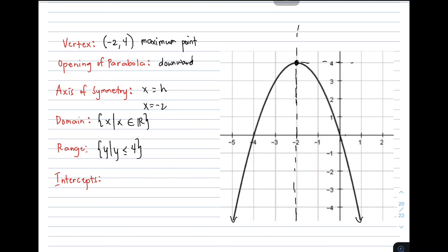For the intercepts: the x-intercepts are (0, 0) and (-4, 0). For the y-intercept, the parabola does pass through the y-axis, and the y-intercept is also (0, 0). Based on our two examples, I hope you learned the different characteristics or parts of the graph of a quadratic function, which is the parabola. If you're new to my YouTube channel, don't forget to like and subscribe, and hit the bell button for future uploads. Again, I am Teacher Gorn. Maraming maraming salamat. Bye-bye!